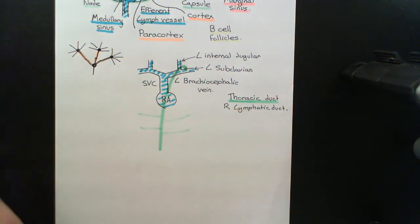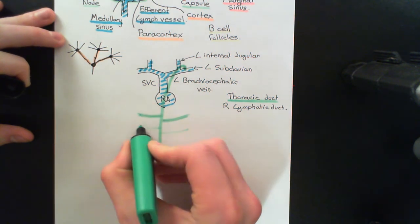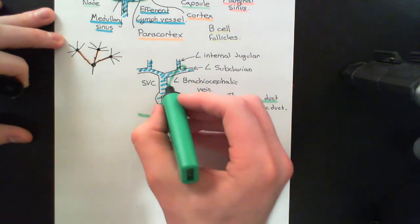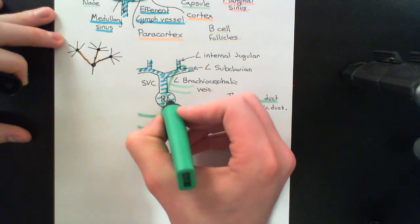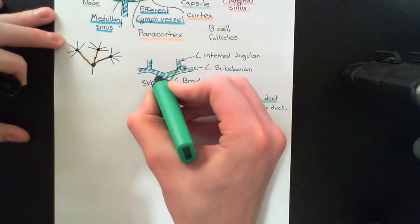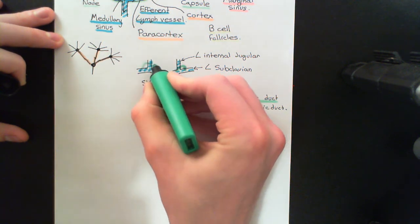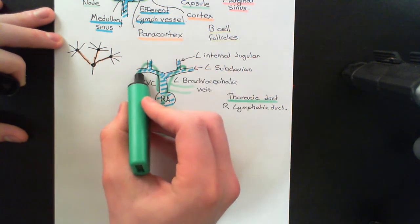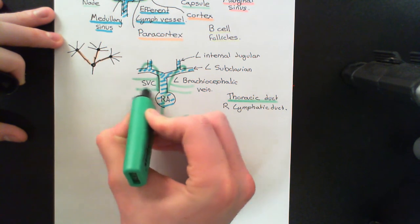Towards the top, what happens is the thoracic duct deviates to the left-hand side and drains into the left subclavian vein, just before it fuses with the left internal jugular vein to form the left brachiocephalic vein. In this superior region where the thoracic duct has deviated to the left, it will now just be draining lymphatic vessels from the left side of the body. So we now have another great lymphatic vessel to do the job of the thoracic duct but on the right side of the body — this is the right lymphatic duct, which drains into the right subclavian vein just before it fuses with the right internal jugular vein, draining lymphatic vessels from the right upper portion of the trunk.